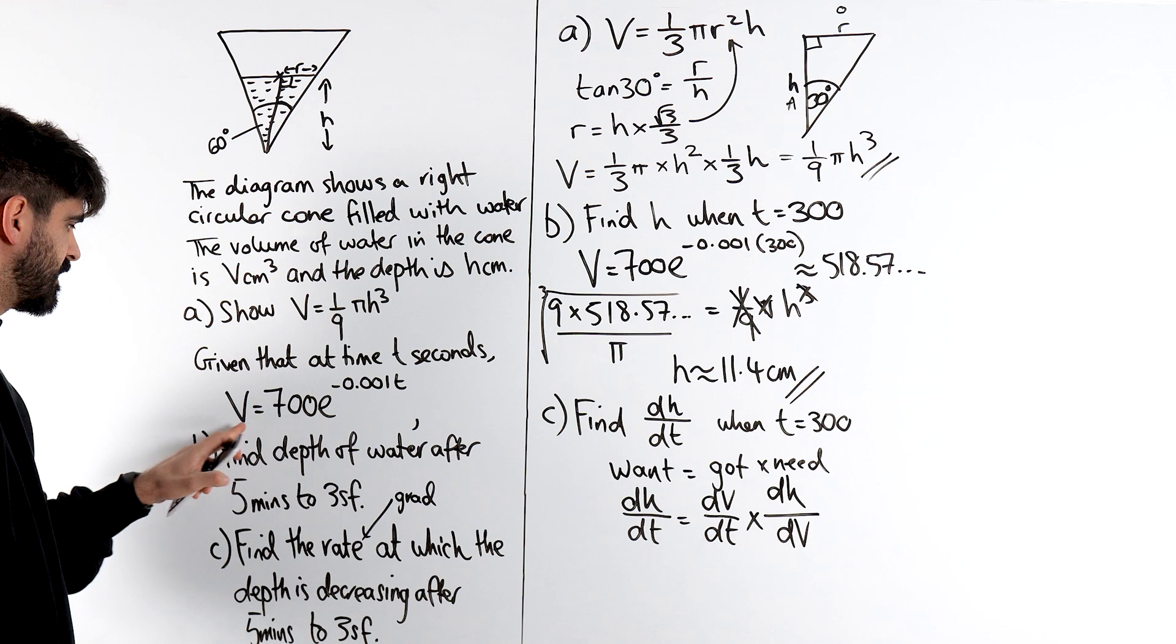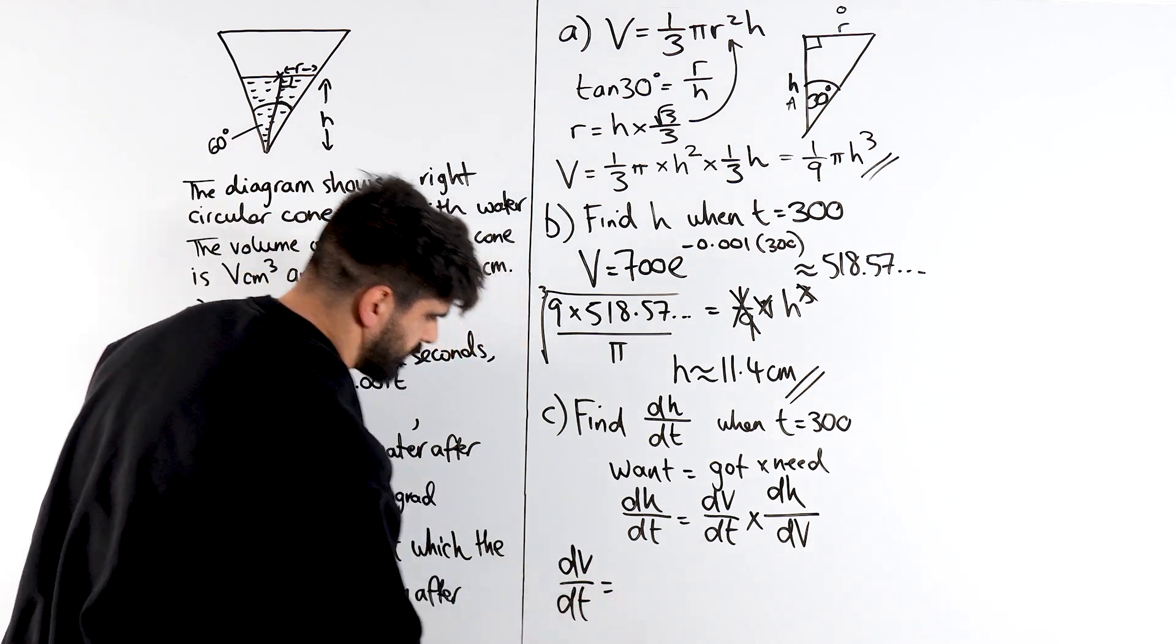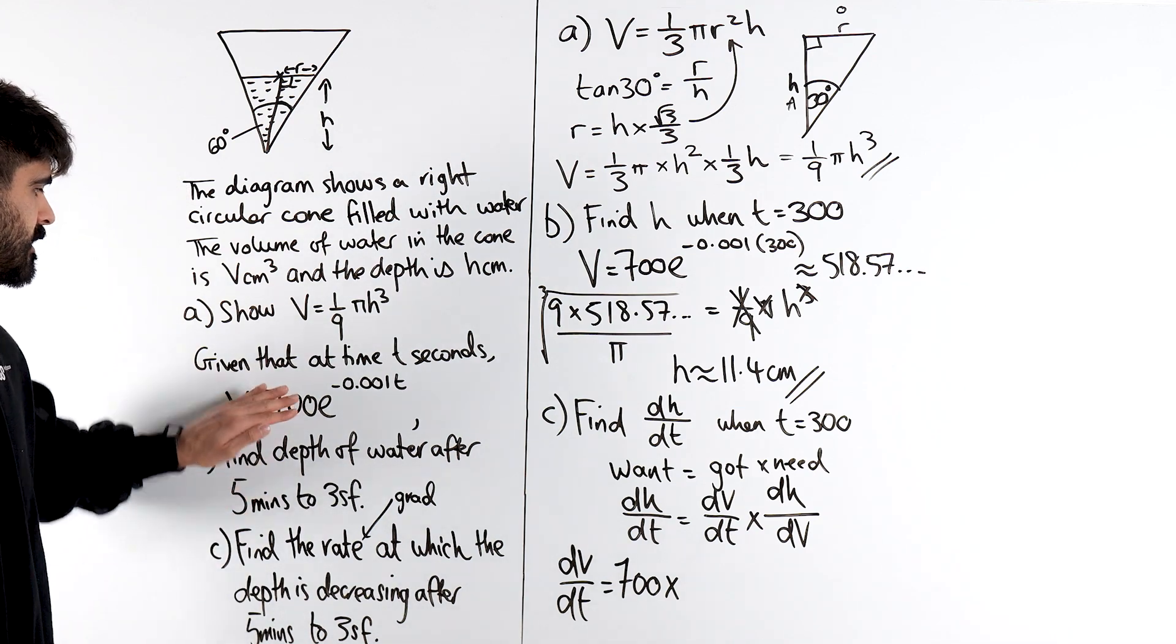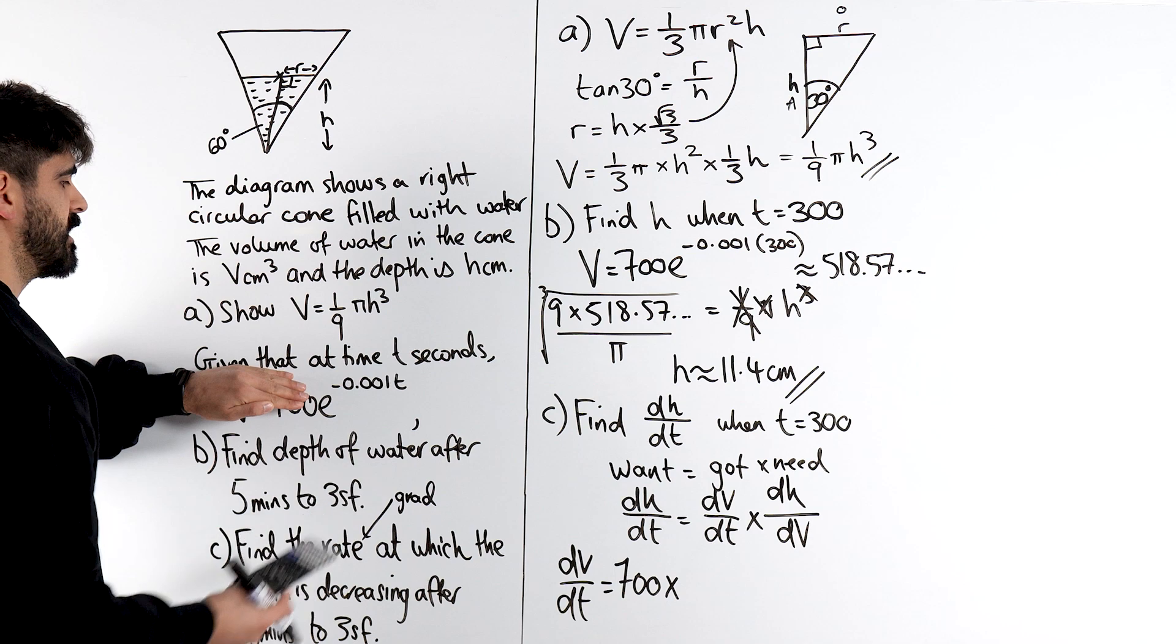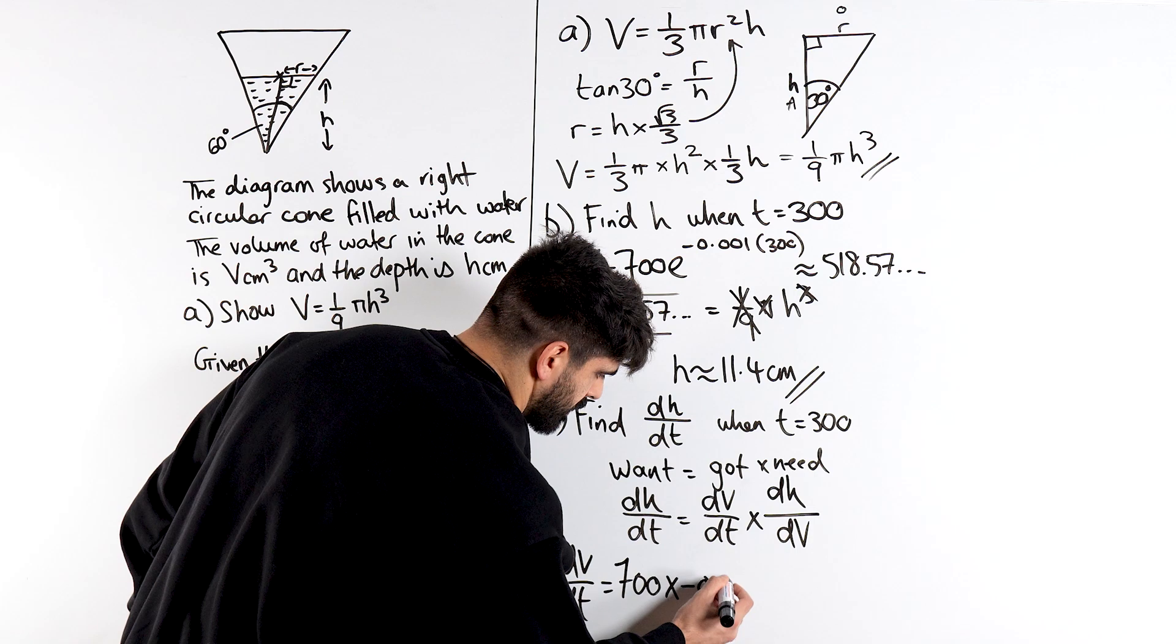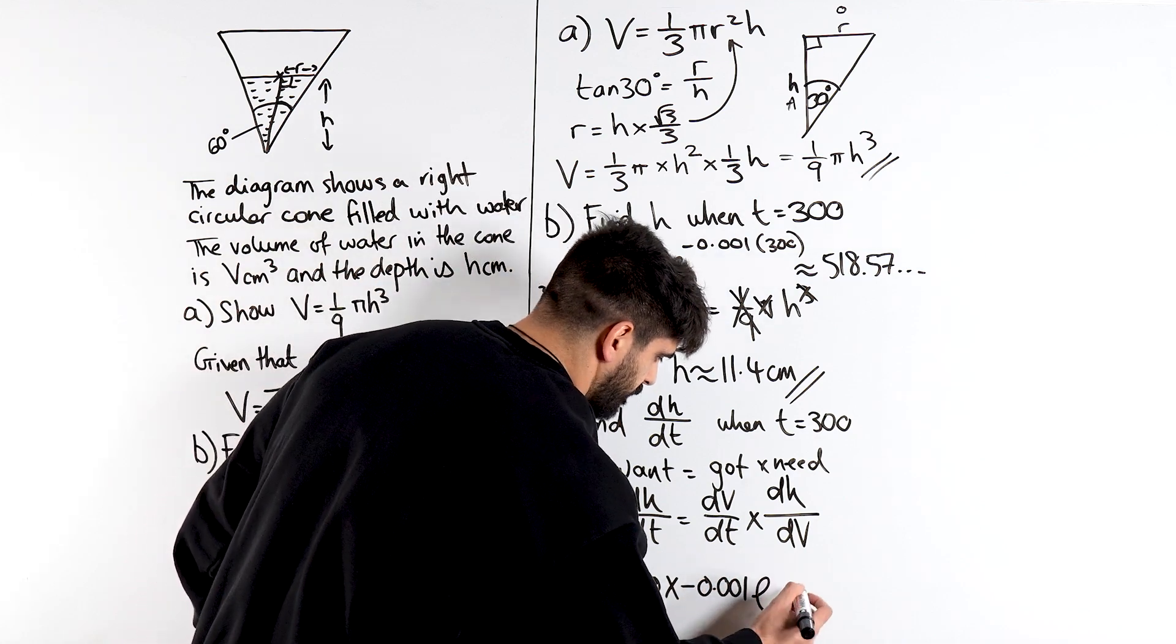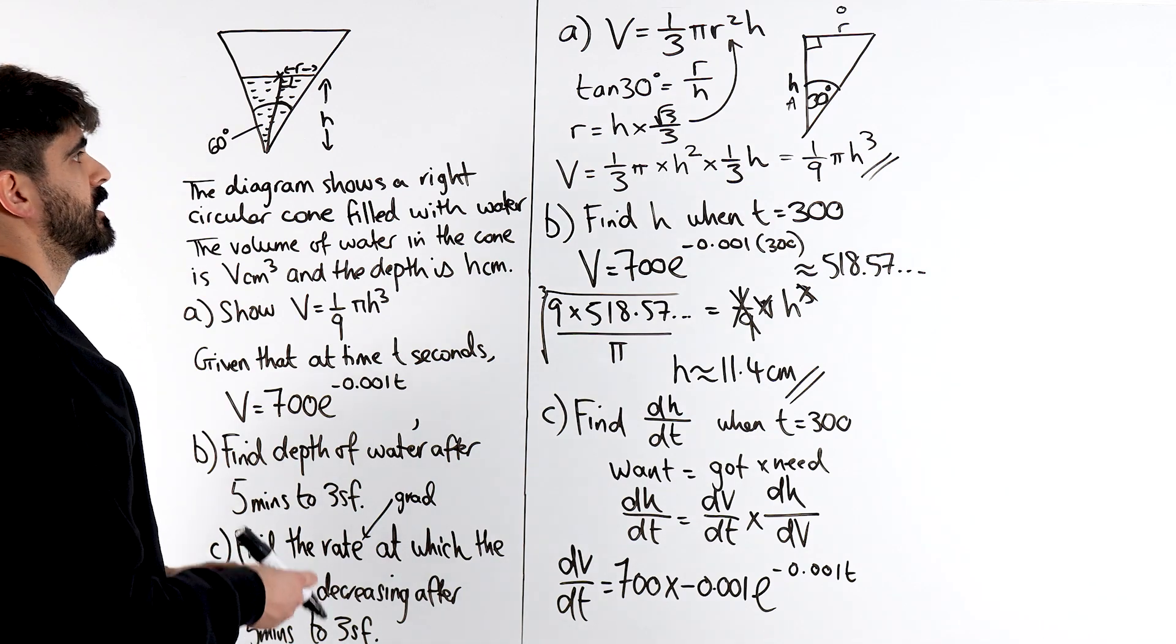So, dV by dT over here. dV by dT is 700 just to multiply. Multiply by. Now, we're just differentiating this exponential. We differentiate the power first. So, differentiating that power, the t just goes. So, we're just going to get minus 0.001. E differentiates to E. And then the power always stays the same.